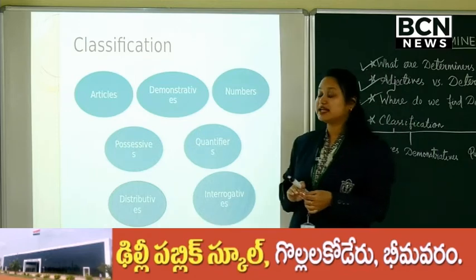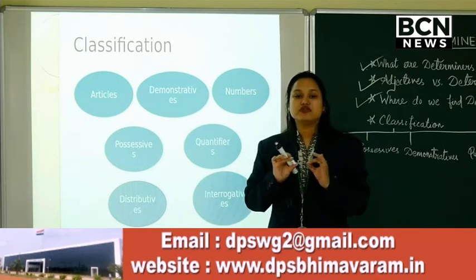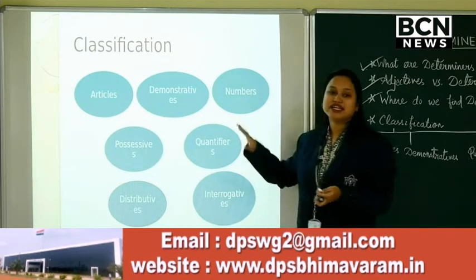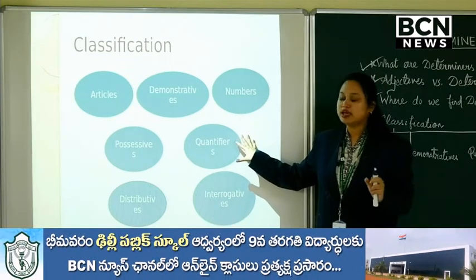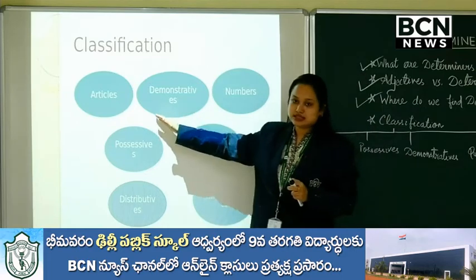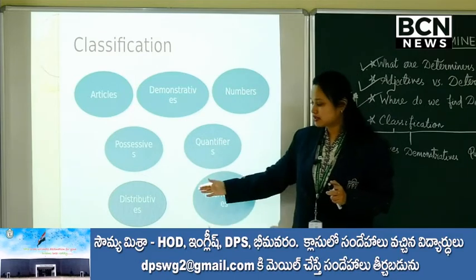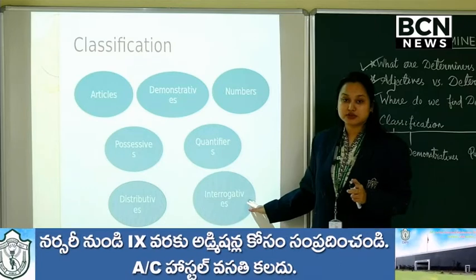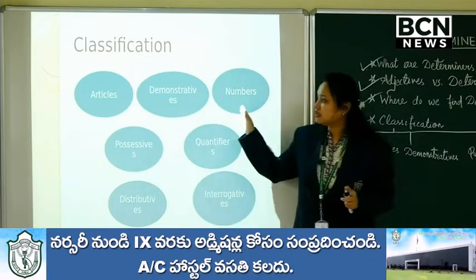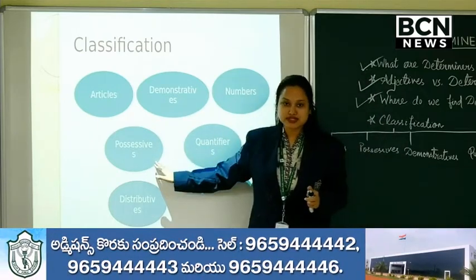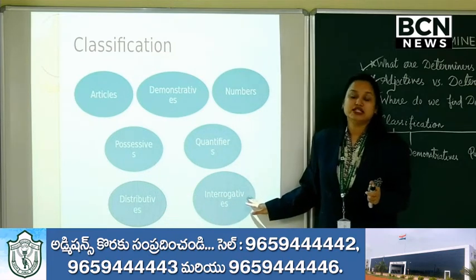Now we come to the classification of determiners — the division, how we categorize them. The classifications are: articles, demonstratives, numbers, possessives, quantifiers, distributives, and interrogatives. Let's see these one by one.